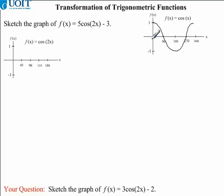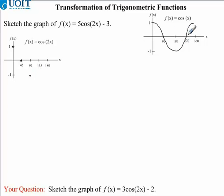Our first point has x equal to 0. Zero divided by 2 is still 0, so that point doesn't change. Looking at our first x-intercept, x equals 90; dividing by 2 gives us 45, so our new x-intercept occurs at x = 45. Our minimum value occurs at x = 180; dividing by 2 gives x = 90. Our next x-intercept at 270 divided by 2 gives 135. And lastly, our endpoint at x = 360 divided by 2 gives a new endpoint at x = 180.